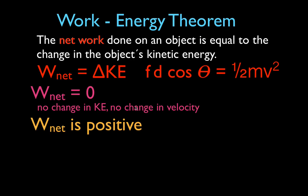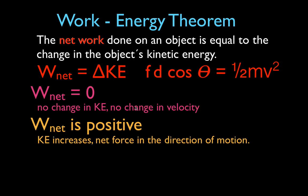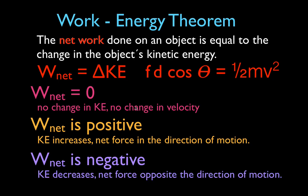If the net work is negative, the object is slowing down and the kinetic energy is decreasing — the net force is opposite the direction of motion. The key thing to remember is that the net work is equal to the change in kinetic energy. If you can calculate the kinetic energy, then you can calculate the work done on an object.